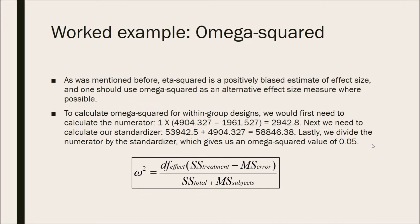As mentioned, eta squared is a positively biased estimate of effect size, so one should use omega squared where possible. To calculate omega squared for within-group designs, we first calculate the numerator: degrees of freedom (1) times the sum of squares for treatment (4,904.327), minus the mean square error (1,961.527), giving a total of 2,942.8. The denominator is the total sum of squares (53,942.5) plus the mean squares for subjects (4,904.327), giving 58,846.38. Dividing numerator by denominator gives an omega squared value of 0.05.